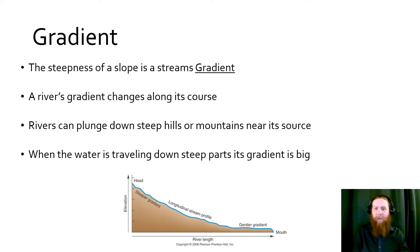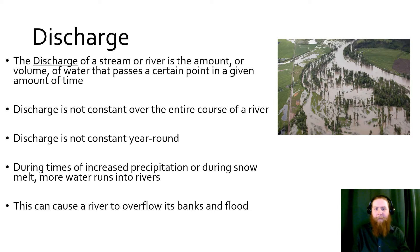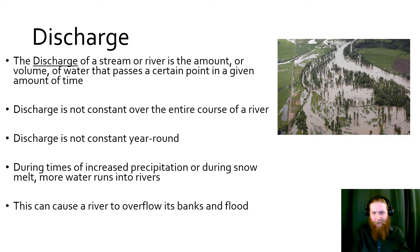For discharge, this is the amount and volume of water going past a certain point — think gallons per minute or gallons per hour. It's not constant over the entire course of the river, and it's not constant year-round. These things change as we get more snow, more precipitation, more rainfall, or when we get snowmelt. When we get more water in here, we get more discharge. This can cause rivers to overflow their banks, depositing water outside of the main channel.